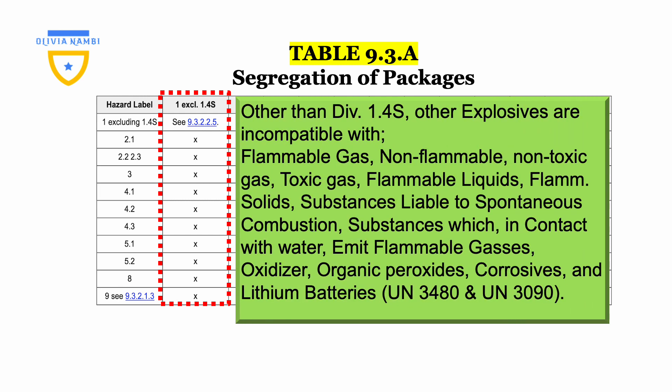Let's see which dangerous goods require segregation with explosives other than Division 1.4s. Other than Division 1.4s, other explosives are incompatible with: flammable gas; non-flammable, non-toxic gas; flammable liquids; flammable solids; substances liable to spontaneous combustion; substances which in contact with water emit flammable gases; oxidizers; organic peroxides; corrosives; and lithium batteries, specifically those of UN 3480 and UN 3090.